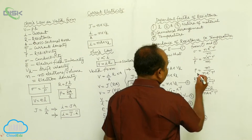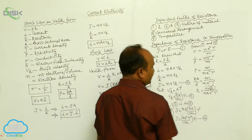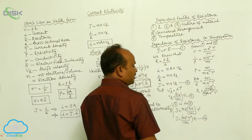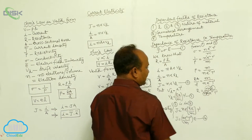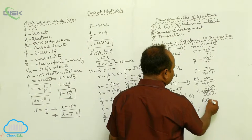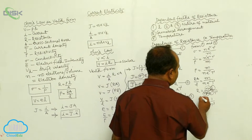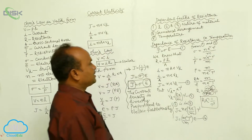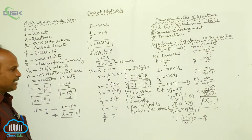Here, m is the mass of the conductor, l is the length of the conductor, n is the number of electrons per unit volume of the conductor, A is the cross-sectional area, and e is the electron charge. Therefore, resistance is inversely proportional to relaxation time tau.